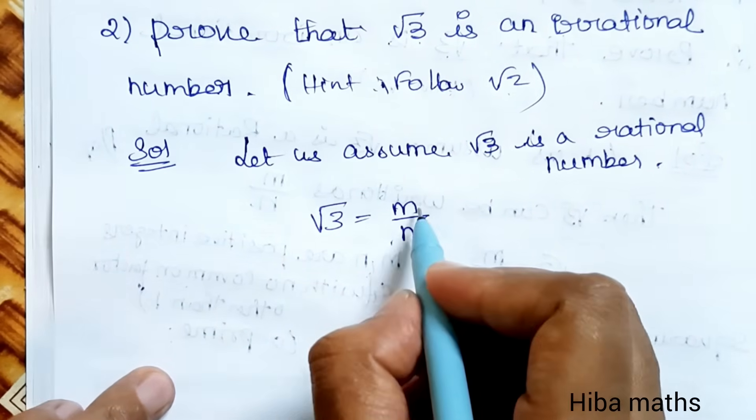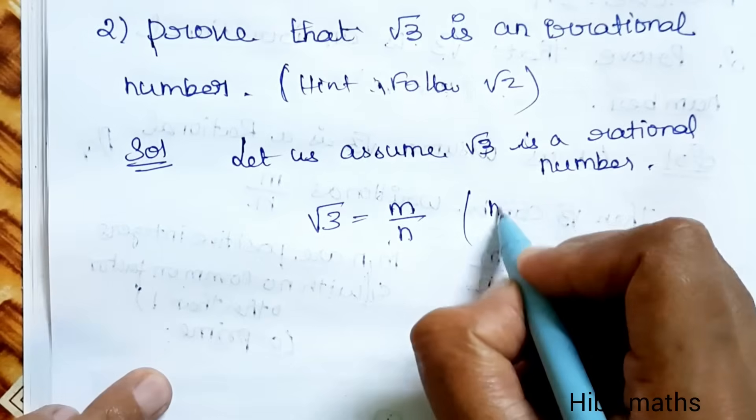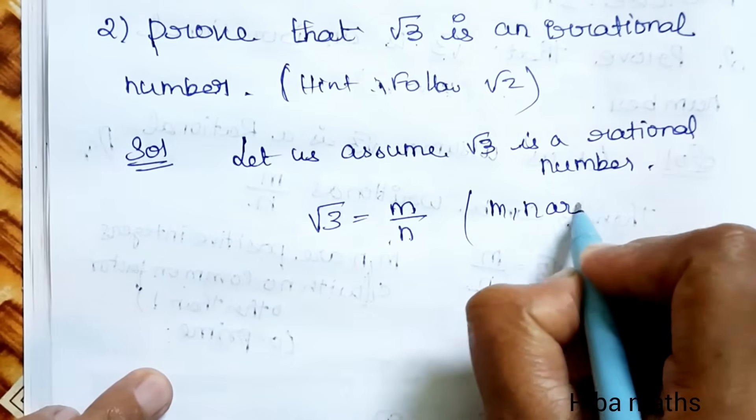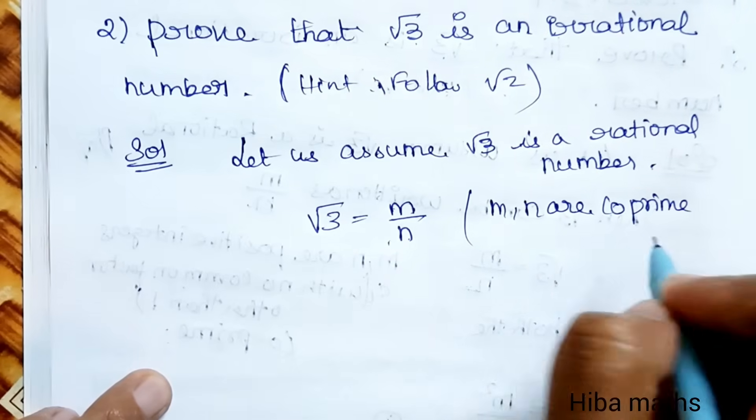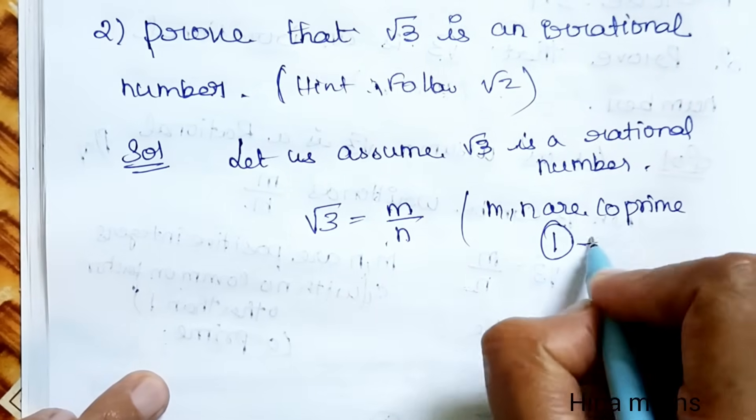Next, M and N are coprimes. Coprimes have one as the common factor.